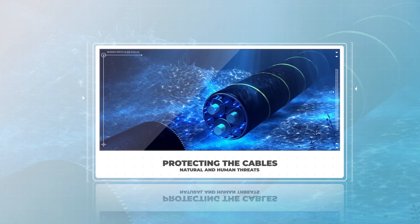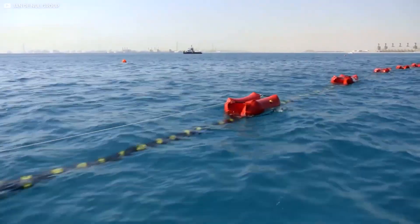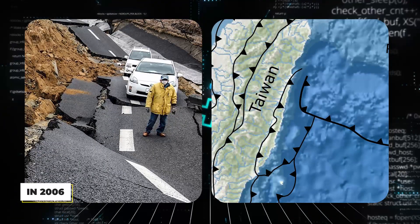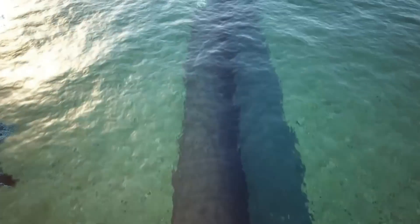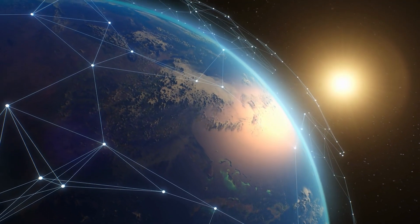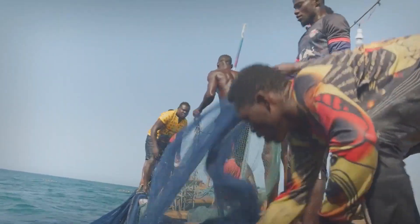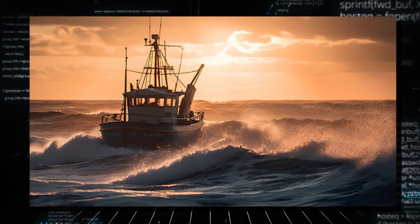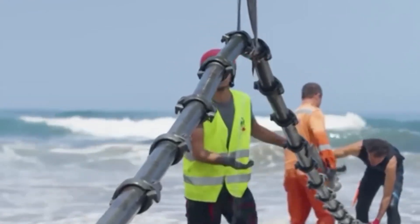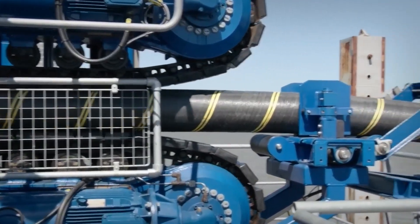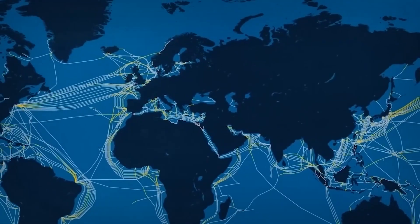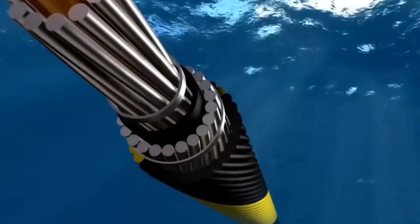Protecting the cables: natural and human threats. Submarine cables may be marvels of engineering, but they are not immune to damage. Natural disasters such as undersea earthquakes and landslides can break cables, disrupting internet connectivity for entire regions. In 2006, a magnitude 7.0 earthquake off the coast of Taiwan severed several submarine cables, leading to widespread internet outages across East Asia. Human activity also poses a threat — fishing boats, particularly those using trawling nets, can accidentally damage submarine cables. Ships dropping anchor in the wrong area can drag cables, causing breaks that require time-consuming and expensive repairs. To mitigate these risks, cables are often laid in regions less prone to natural disasters, and in high-traffic areas they are buried beneath the seabed. Cable operators also use monitoring systems to detect breaks or damage quickly, allowing them to respond and repair the cables as soon as possible.